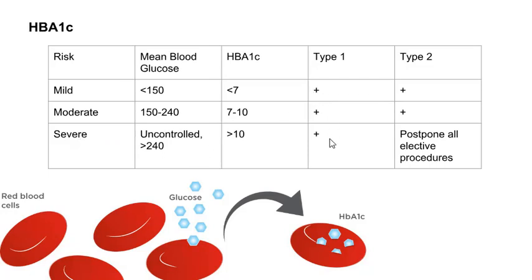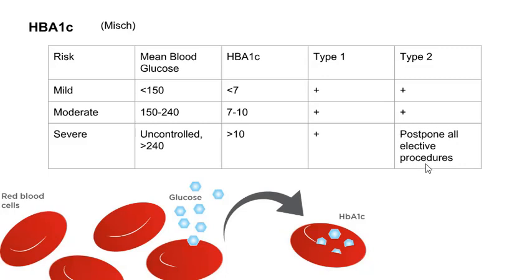The plus signs on the side of the chart indicate that the MISH textbook still felt it was possible to proceed with regular implant protocol for implant surgery. The only category of patients the MISH textbook says not to proceed with is the type 2 diabetic who has severe, uncontrolled diabetes.